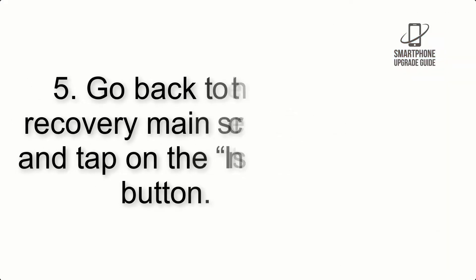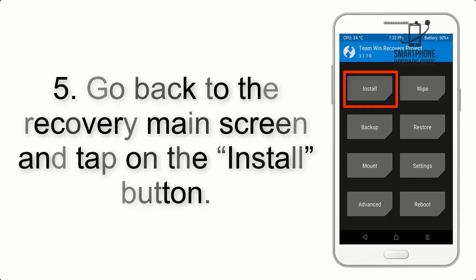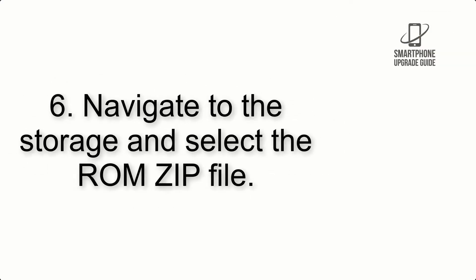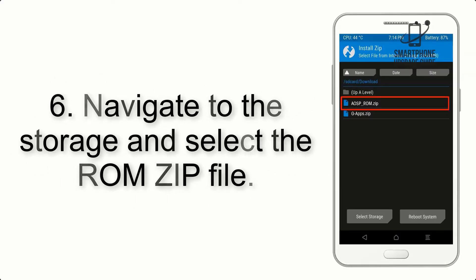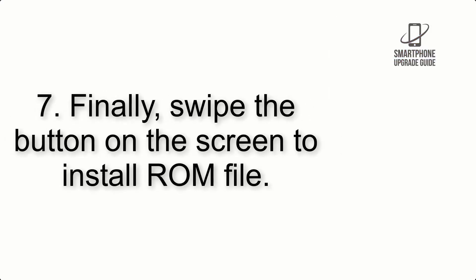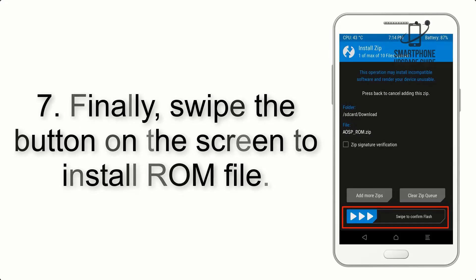Step 4: Swipe the button to wipe the device. Step 5: Go back to the recovery main screen and tap on the Install button. Step 6: Navigate to the storage and select the ROM zip file.